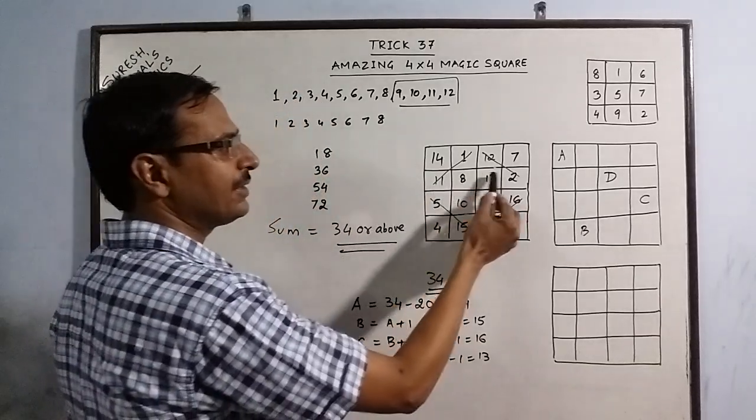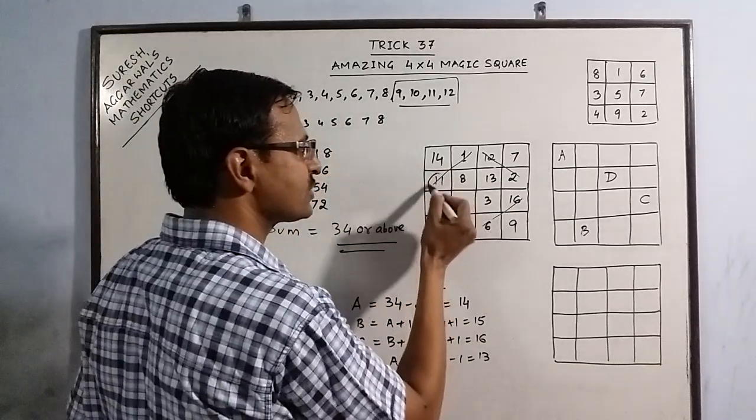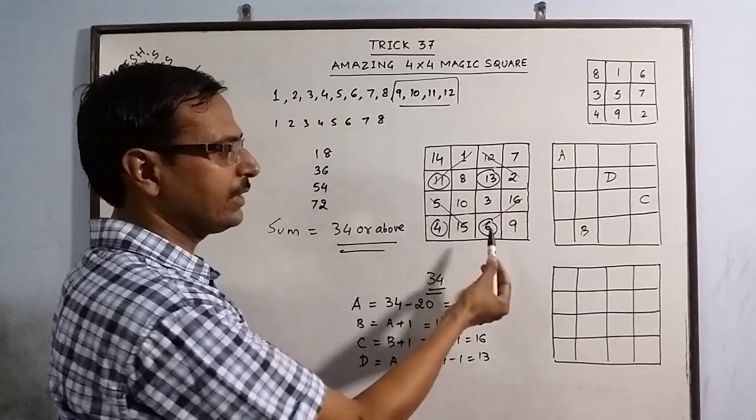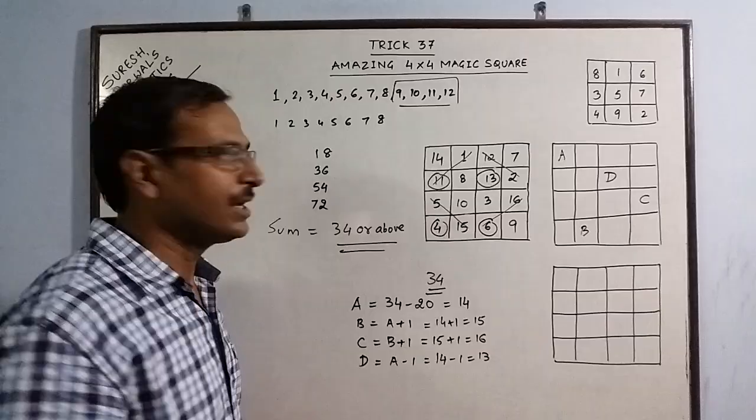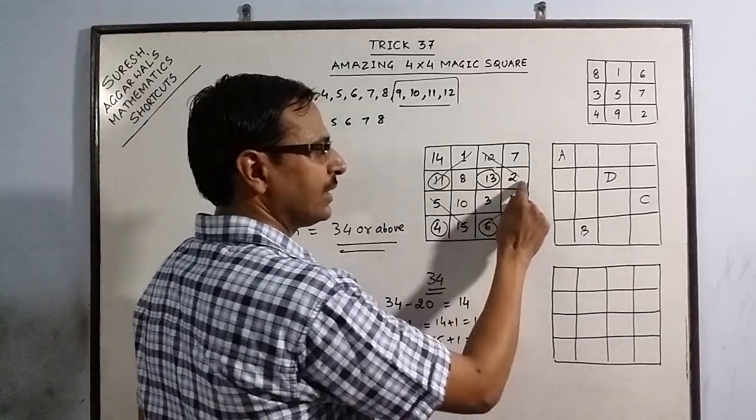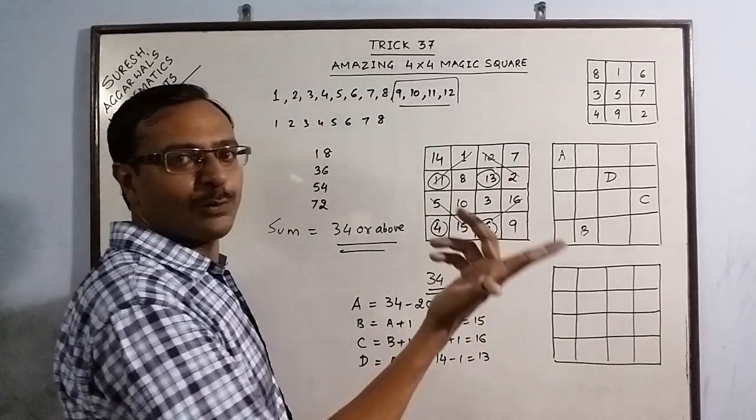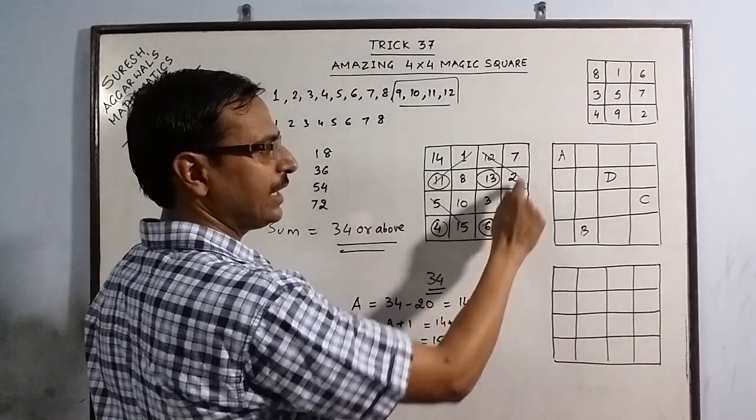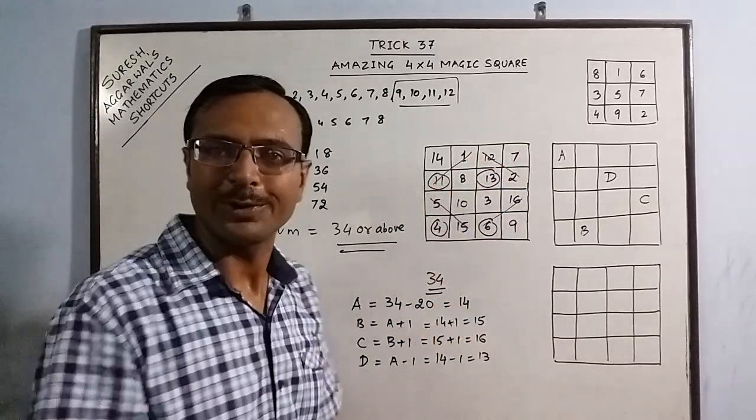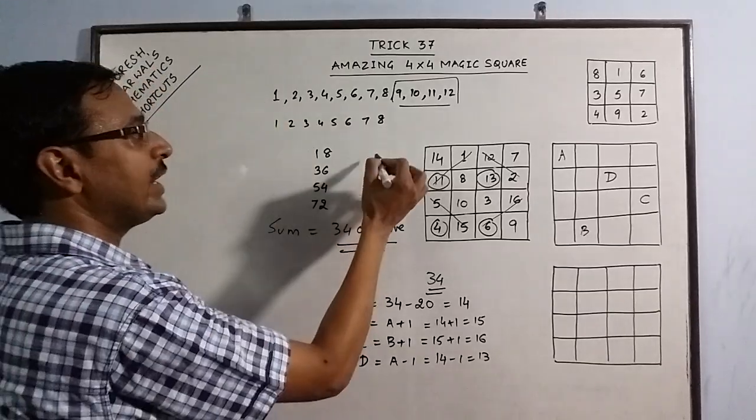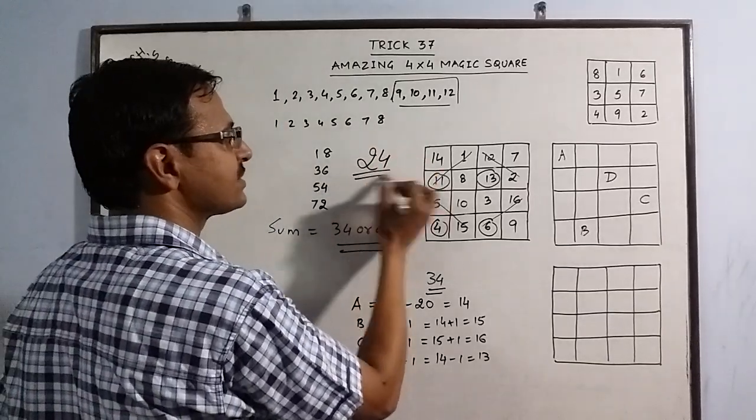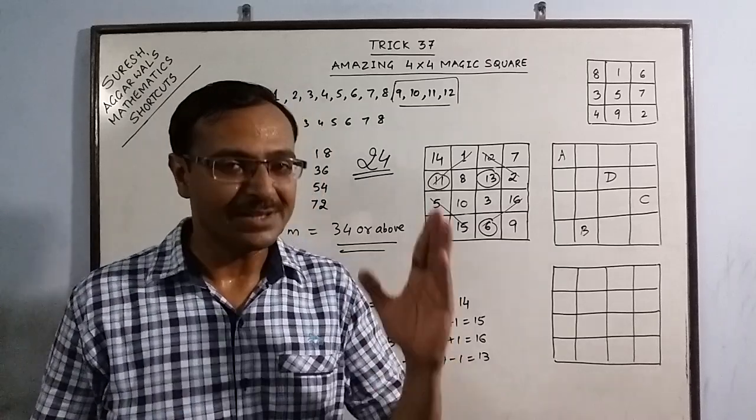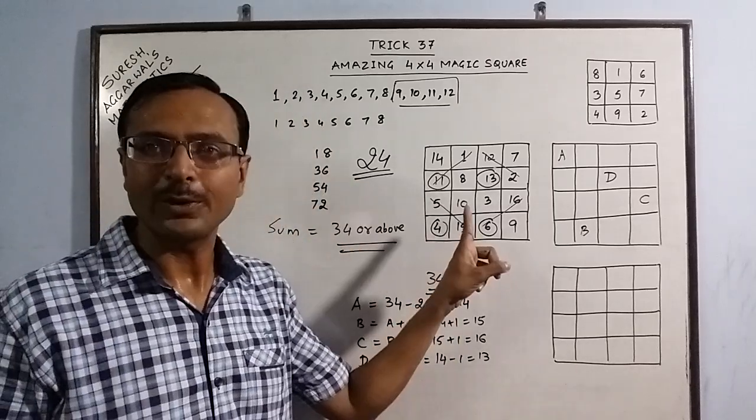See, 11, 13, 6 and 4. This is another square. 11, 13, 6 and 4. Now, check 11 plus 13, 24, 24 plus 10, 34. Likewise, you can check 8 plus 2, 10 plus 9, 19 plus 15, 34. 14 plus 12, 26 plus 8, 34. 7 plus 1, 8 plus 16, 24 plus 10, 34. So, you get 24 such patterns. 24 such patterns in which the sum of the numbers will always be the same. That is 34 in this case.